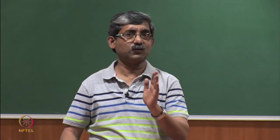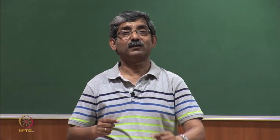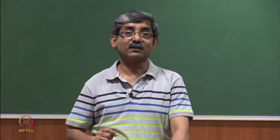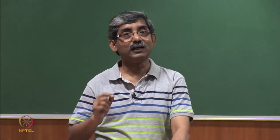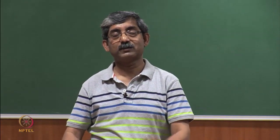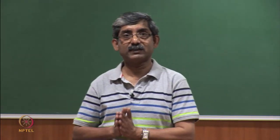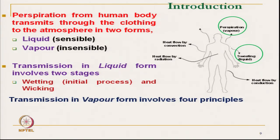Moisture normally gets transmitted in two forms: one is in vapour form, which we call insensible perspiration, and another is sensible perspiration, which is in liquid or sweat form. This total moisture management is extremely important. First let us try to see the perspiration from the human body — as mentioned, it transmits through clothing to the atmosphere in two forms: one is liquid form, which is sweat, and second is insensible, which is in vapour form.